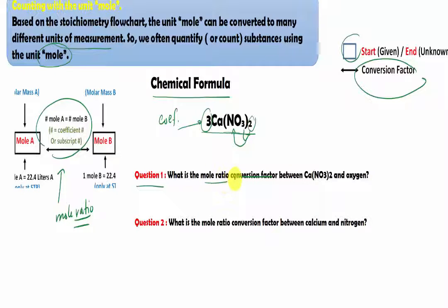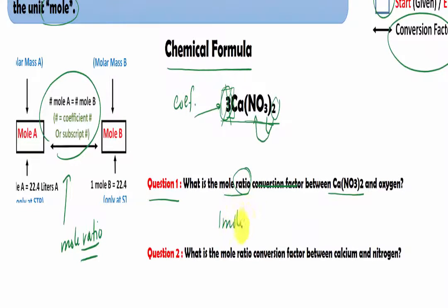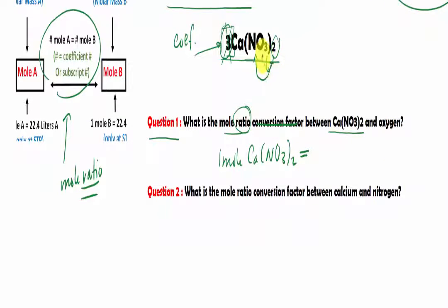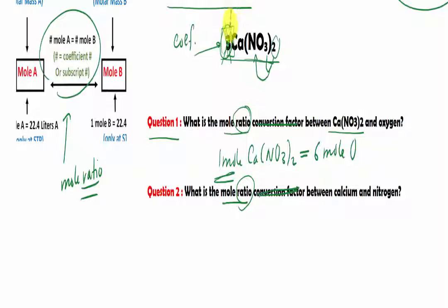A mole ratio is a conversion factor between substances — in this case, between calcium nitrate and oxygen. Since we want a ratio, we ignore the coefficient 3 and say: one mole of calcium nitrate contains 2 × 3 = six moles of oxygen. For the mole ratio between calcium and nitrogen: we have one mole of calcium, and 2 × 1 = two moles of nitrogen. These are the conversion factors called mole ratios from this chemical formula.